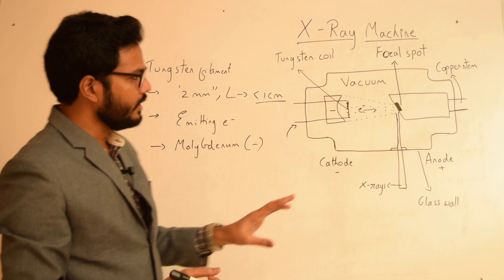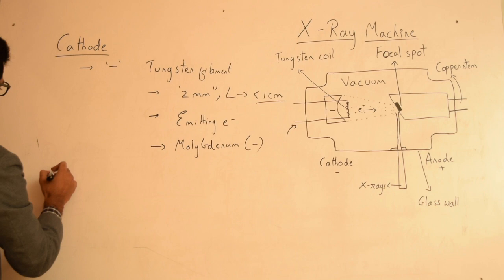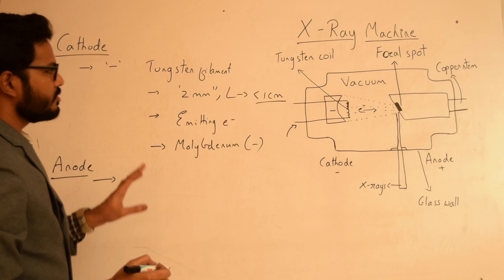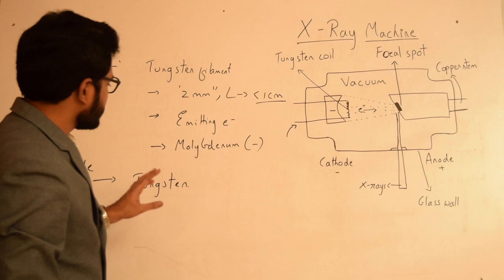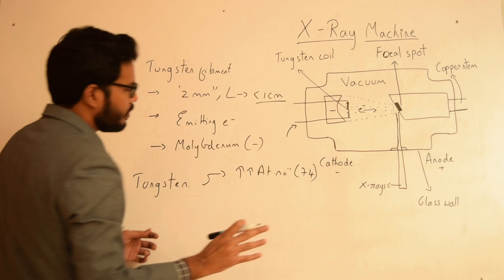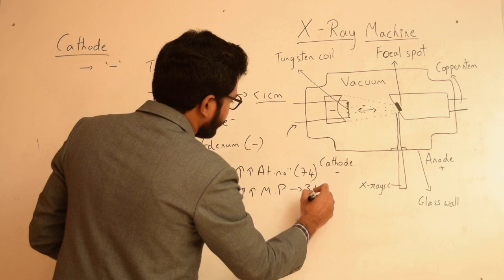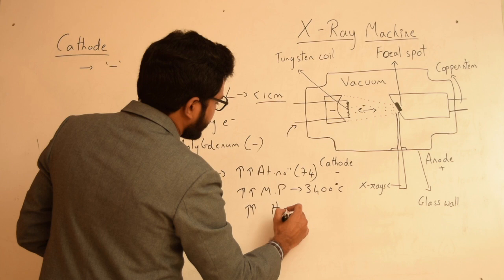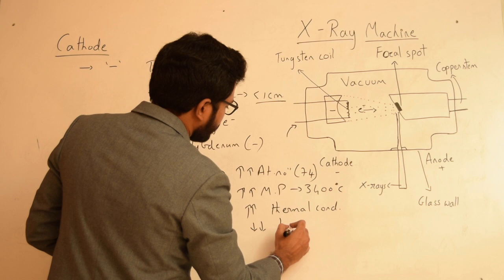Now let's discuss the anode. The anode is also made up of tungsten. The reasons for choosing tungsten include: it has a very high atomic number of exactly 74, a very high melting point of around 3400 degrees centigrade, very high thermal conductivity, and very low vapor pressure.